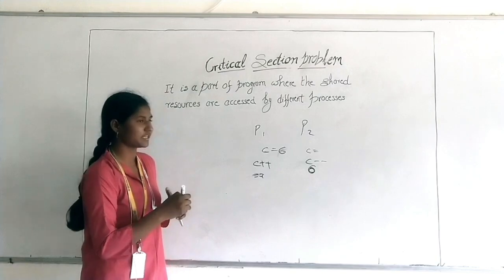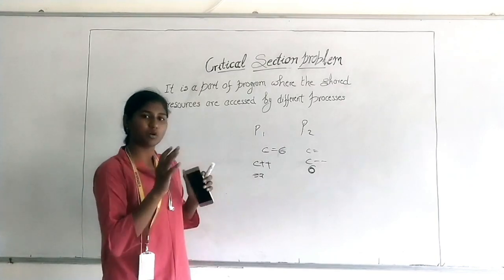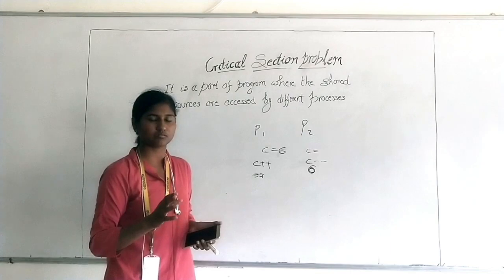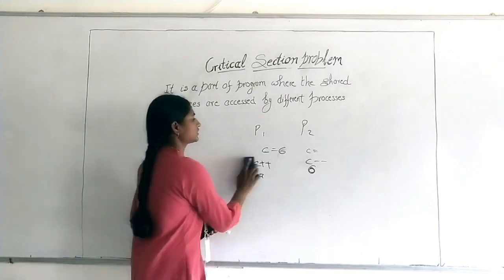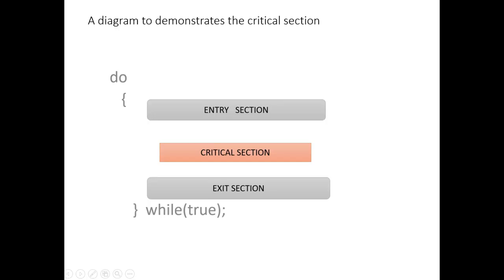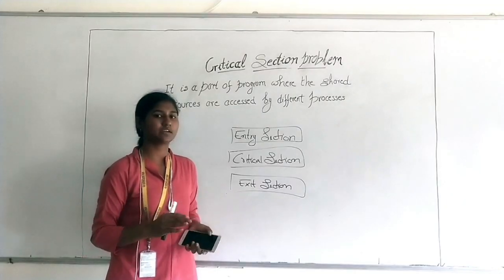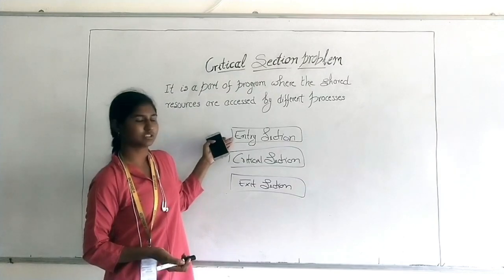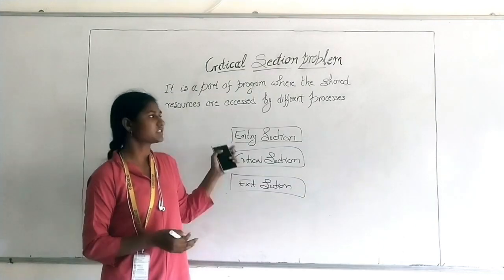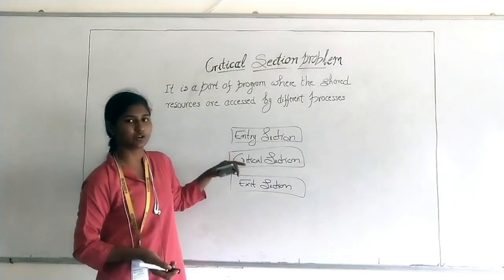To solve this, we are creating one section so that entry will be only one, and each process can come one at a time — individually. What we will do is make one section called the entry section and another called the exit section. Whenever any process comes, it will first enter into the entry section, then only it can go to the critical section.